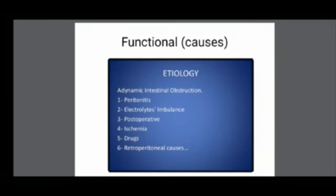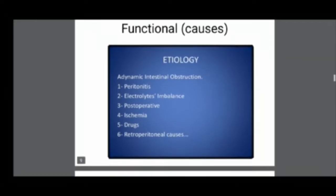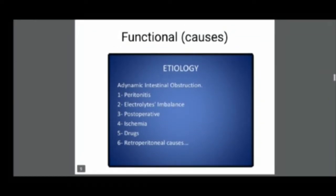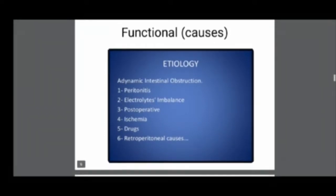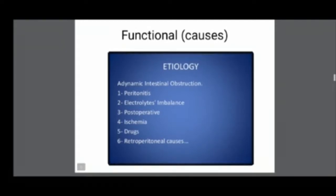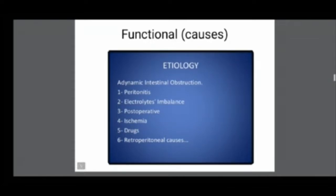Functional causes of intestinal obstruction mean there is no stricture, no hernia, no adhesion bands, and no tumours. Instead, conditions like peritonitis cause paralytic ileus. Electrolyte imbalance also causes paralytic ileus, which means there is paralysis in the intestine — peristalsis is stopped. Because of the absence of peristaltic movement, intestinal obstruction occurs with no mechanical cause.